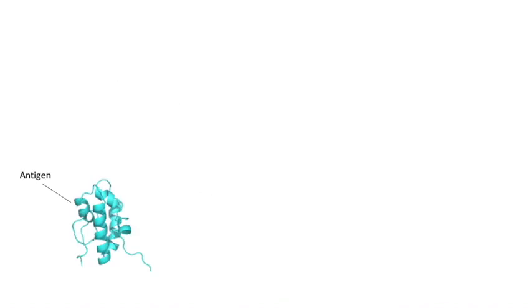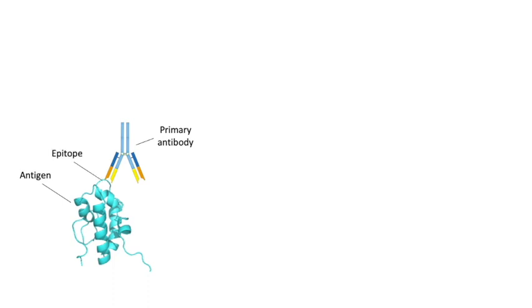Here is an example of a protein that we want to visualize. We might also refer to this protein as the antigen, as it is the target of an antibody. Antibodies are proteins produced by the immune system of animals and they are designed to recognize and bind to specific protein sequences. The antibody that recognizes the protein of interest is what we call the primary antibody, and the part of the protein detected by the antibody we call the epitope.